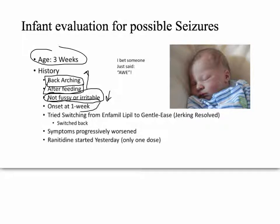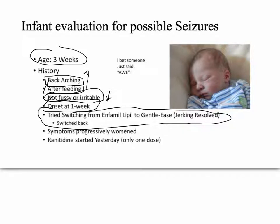Onset was about a week after birth — that's kind of a clue, but not a strong one. The fact that the formula was switched from Enfamil Lipil to Enfamil Gentlease would rule up a specific cause of these spasms, but it was not the ultimate diagnosis. So I think it's a red herring.